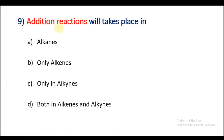Question number 9: Addition reactions will take place in — only alkenes, only alkynes, or both alkenes and alkynes? As we already know, addition reactions take place in unsaturated hydrocarbons — alkenes and alkynes. So option D is the right answer.